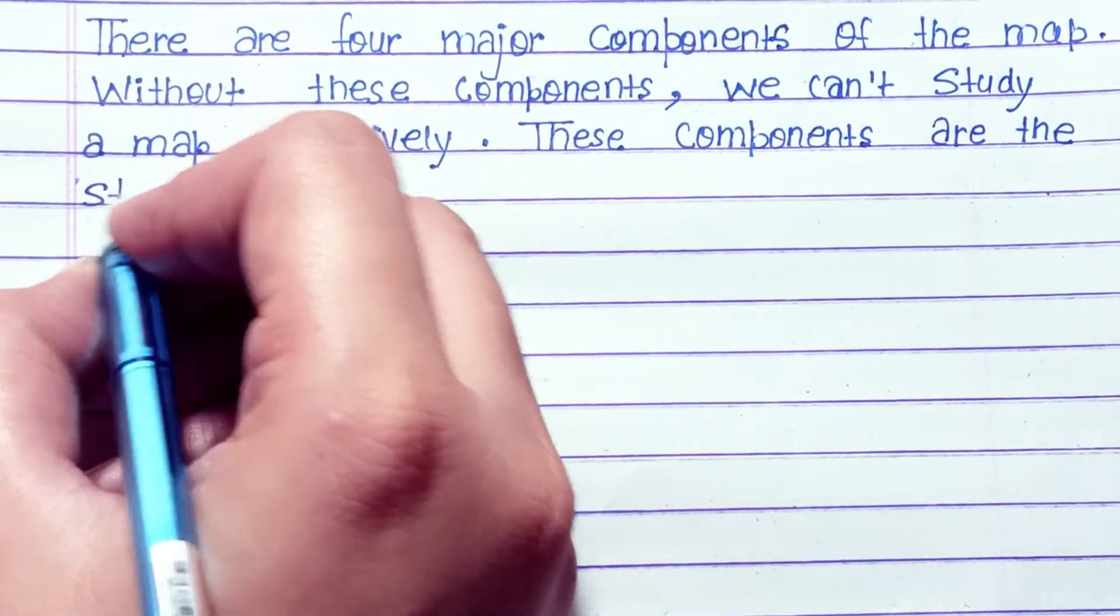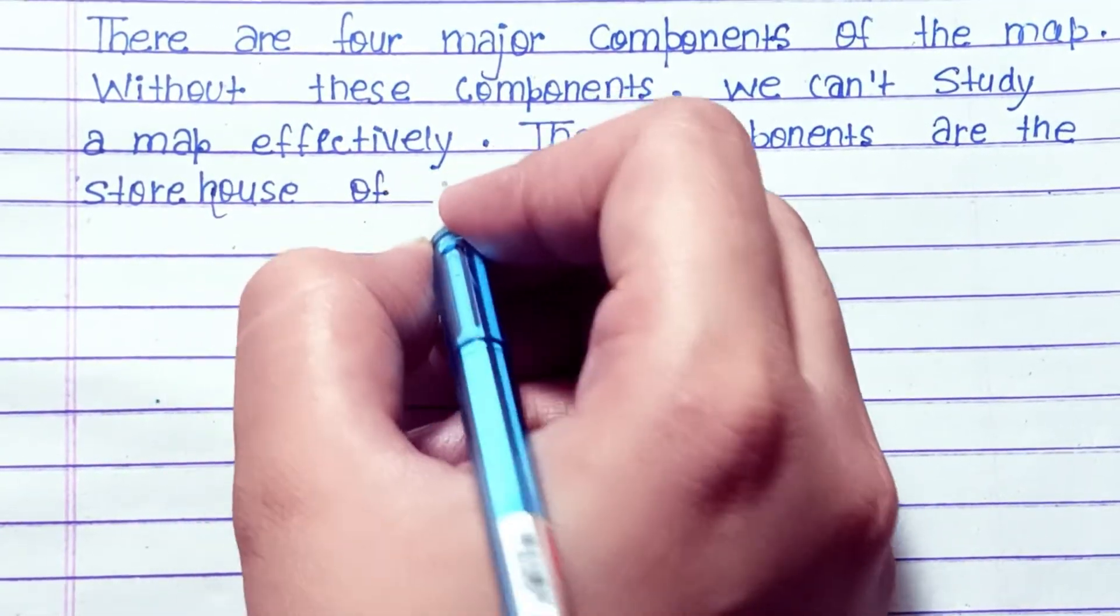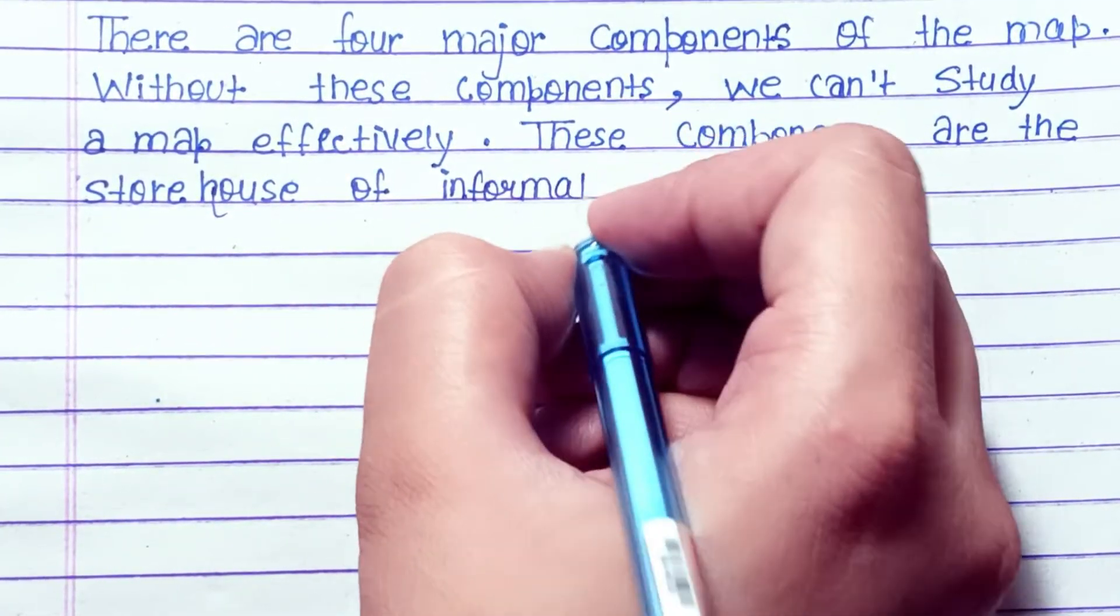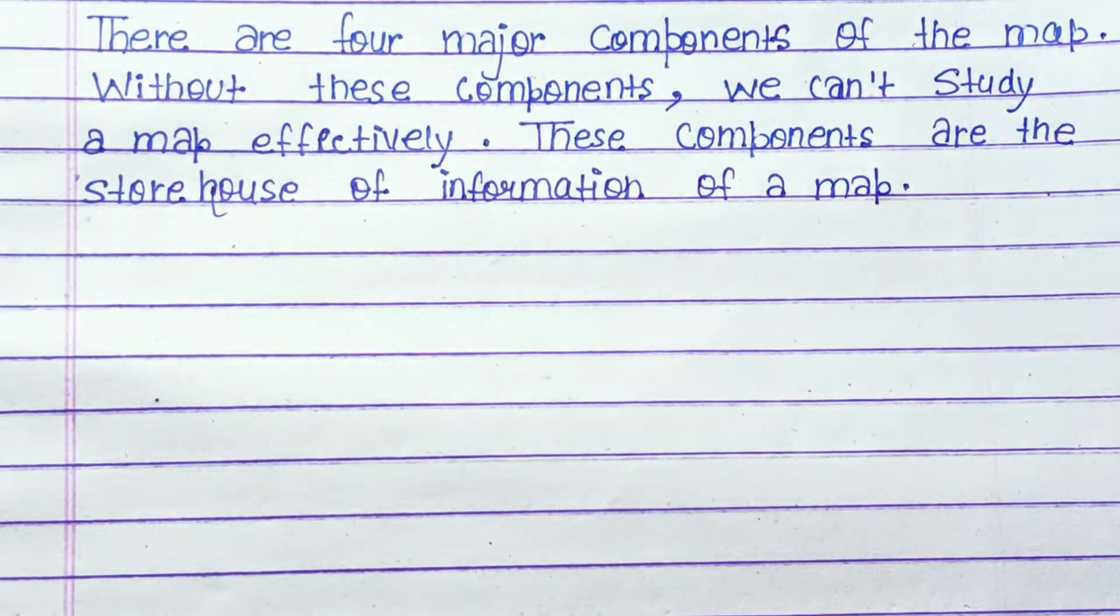There are four major components of the map. Without these components we can't study a map satisfactorily. These components are the storehouse of information of a map.